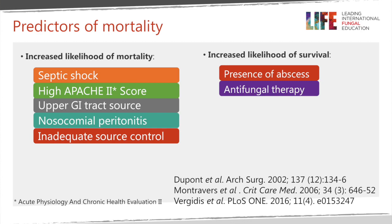Predictors of mortality include septic shock, high APACHE score, upper GI tract source, nosocomial infection with multi-drug resistant organisms, and inadequate source control. On the other hand, the presence of an abscess is easier to manage, and outcomes are better whenever antifungal treatment is administered.